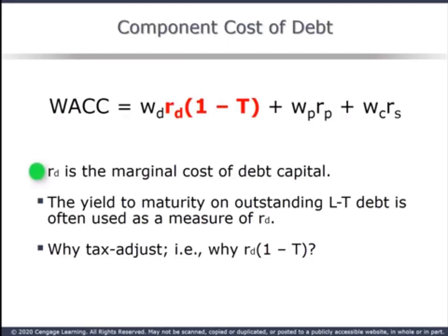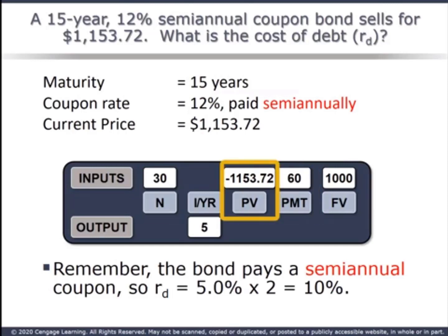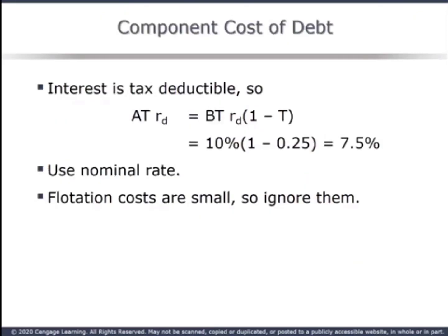The cost of debt we need is the marginal cost — the cost of what the next dollar of debt raised would cost — which equals the yield to maturity on Coleman's current debt. And don't forget, interest on debt is tax deductible, so we adjust the cost of debt accordingly. For the maturity of 15 years and semi-annual coupon, N equals 30. The coupon of 12% annually equals $120 divided by 2, so payment is $60. Current price is entered as a negative present value; future value is 1,000. Solving for I/Y gives 5%, but this is a semi-annual bond, so we need to double the resulting I/Y to find the annual yield to maturity of 10%. To compare the cost of debt with other capital components, we need the after-tax cost: 7.5%.